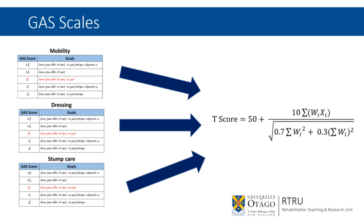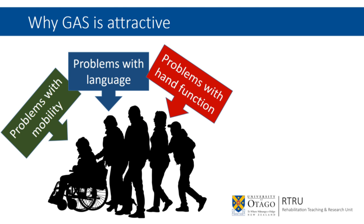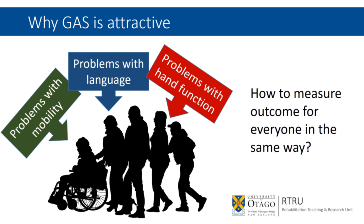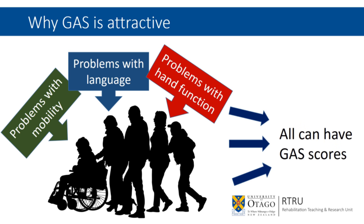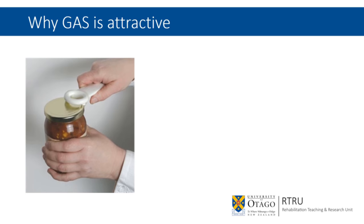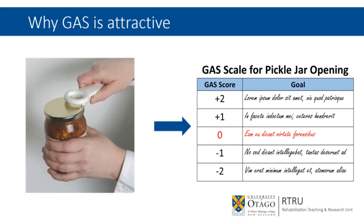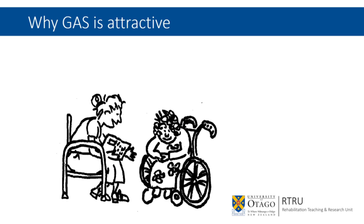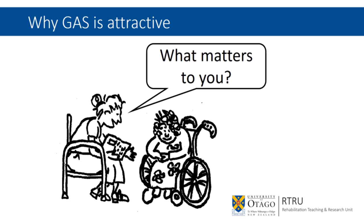Goal achievement scaling has gained popularity as an outcome measure for a number of reasons. Rehabilitation patients often present with a wide variety of different kinds of problems, which can make it difficult to find one clinical outcome measure suitable for all people. GAS scores can convert this heterogeneity into a common metric, a single score of goal achievement. Individualized goal attainment can also be tailored to be sensitive to small changes in outcome that would otherwise be missed by standardized outcome measures, such as the Barthel Index or the Functional Independence Measure. There's also appeal in involving patients in the selection of criteria on which to judge the effectiveness of a program of rehabilitation, supporting the notion of collaborative rehabilitation design and person-centered practice.